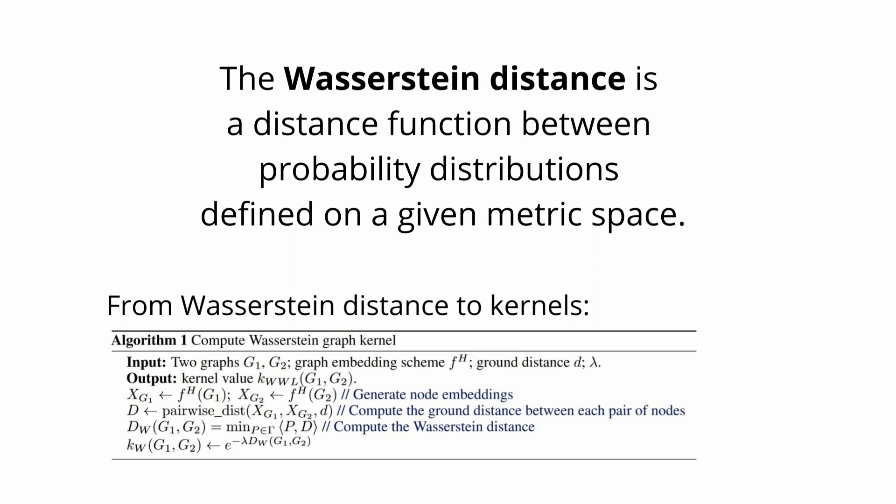There is a pseudocode algorithm to compute the Wasserstein graph kernel. The inputs are two graphs, a graph embedding scheme, and a ground distance — the ground distance being a notable limitation built into the algorithm. The outputs are: generate the node embeddings, compute the ground distance between each pair of nodes, and then compute the Wasserstein distance. I will leave a link to the original arXiv preprint in the description so you can dive deep into this.